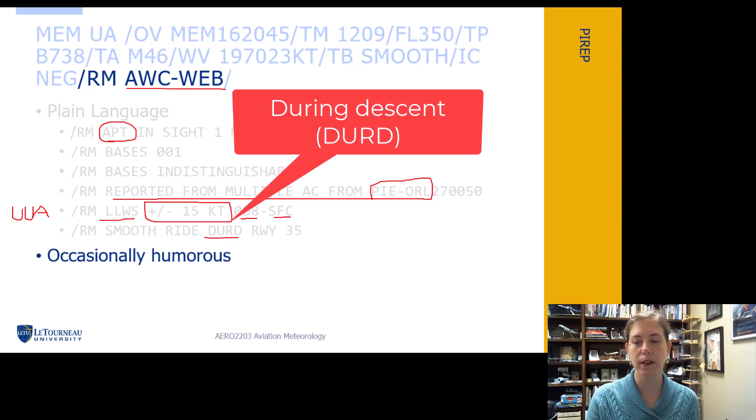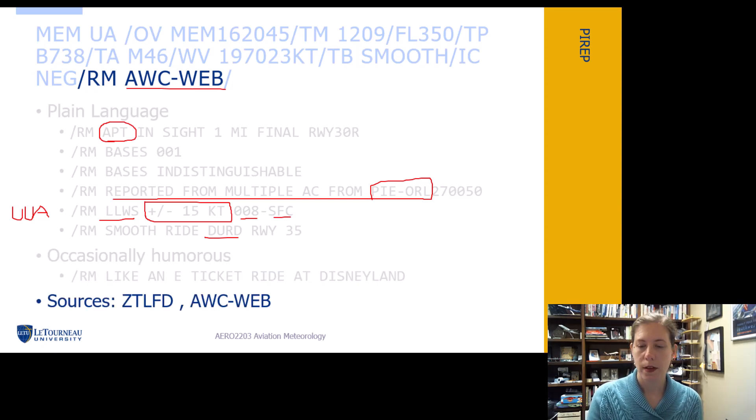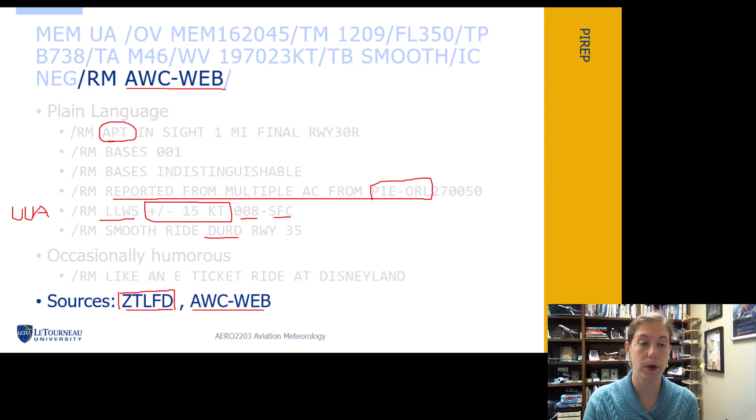Sometimes people get kind of funny, and they'll come up with funny stuff like smooth, like an e-ticket ride at Disneyland. I have no idea, but these are kind of fun to look for from time to time. Sometimes you see in the source, if you see something like this, this is an ATC entity entering the information. And then like I mentioned, a dispatcher can type this in on Aviation Weather website.